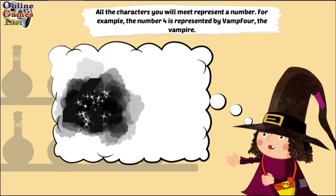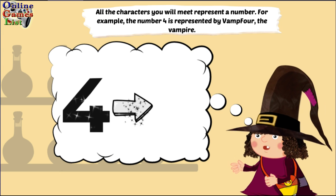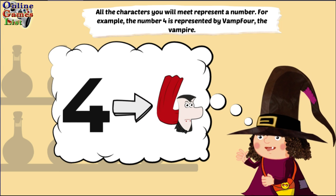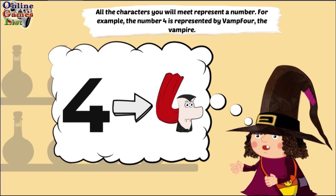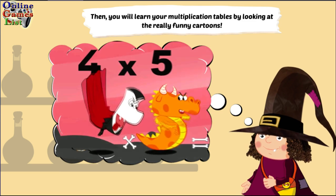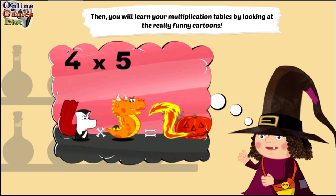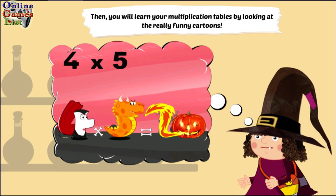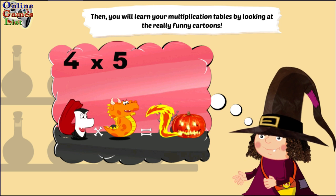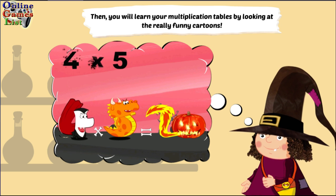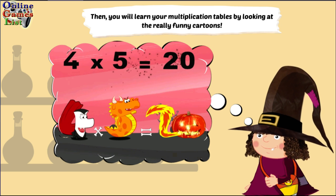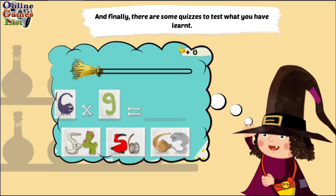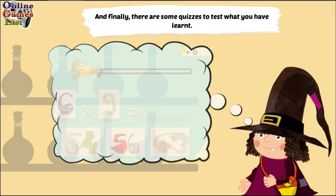All the characters you will meet represent a number. For example, the number 4 is represented by Vamp 4, the vampire. You will learn your multiplication tables by looking at really funny cartoons. And finally, there are some quizzes to test what you have learnt.